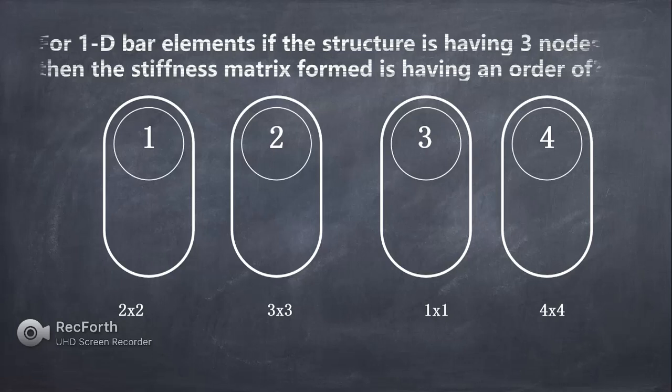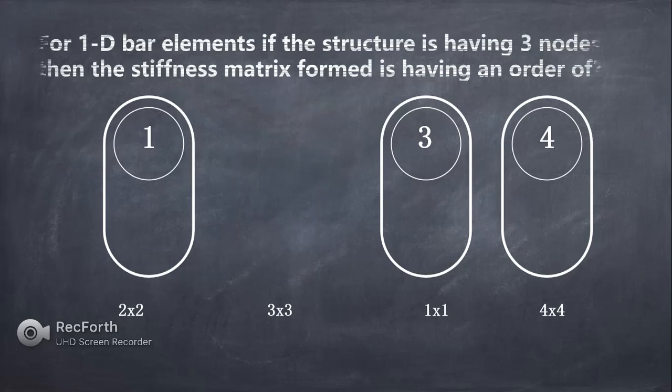The eighth question is: for a 1D bar element, if the structure has 3 nodes — 2 at the ends and 1 in the middle — what is the order of the stiffness matrix formed? The matrix will be 3×3, because the number of nodes is 3.